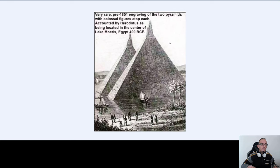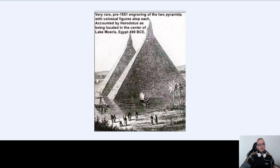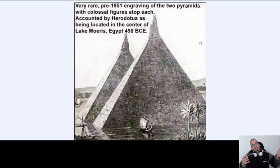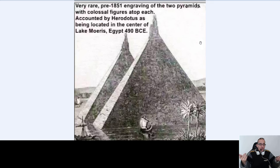This is a very rare pre-1851 image by the ancients of the 1800s — two pyramids with colossal figures on top of each. So if the pyramids had these colossal statues on top, and this is machine-processed anyway, the thing with Herodotus and the years before and after Christ — we don't really know, because we are ignorant. We only read the books that they give us.